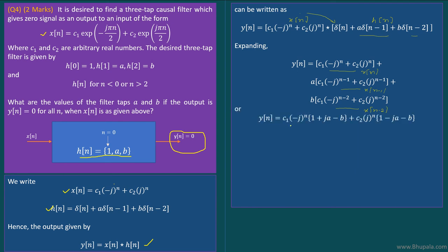Taking c1·(−j)^n as a common factor, the bracket becomes (1 + j·a − b). Similarly, taking c2·(j)^n as common, the bracket becomes (1 − j·a − b). So y[n] = c1·(−j)^n·(1 + j·a − b) + c2·(j)^n·(1 − j·a − b).